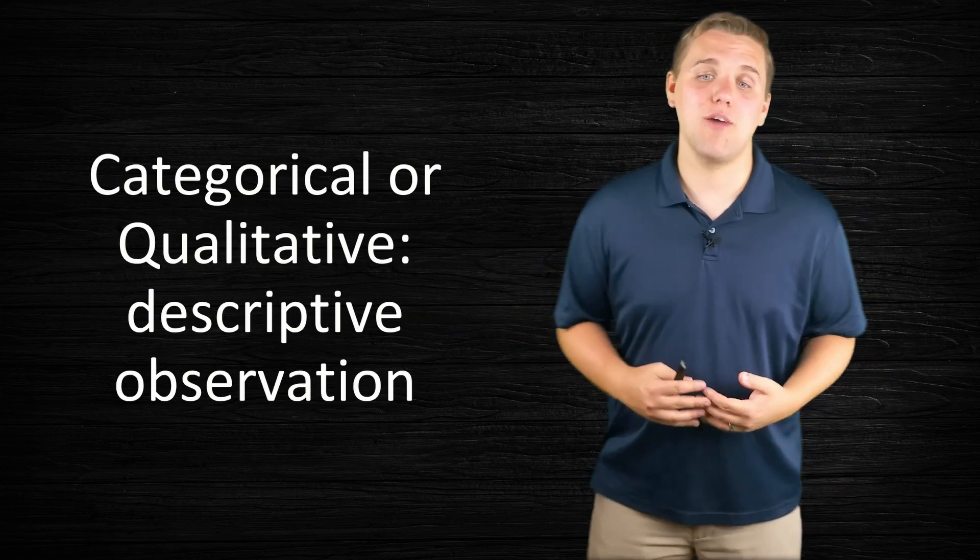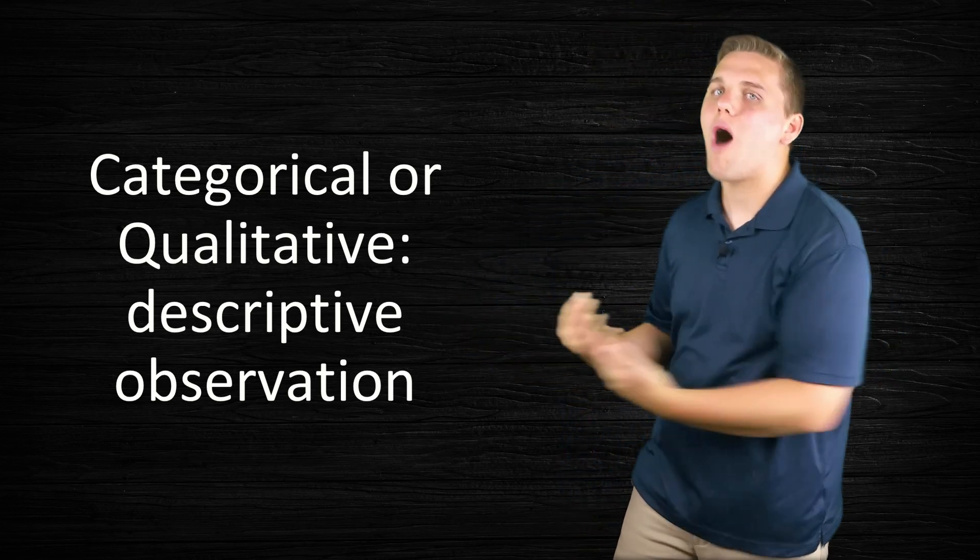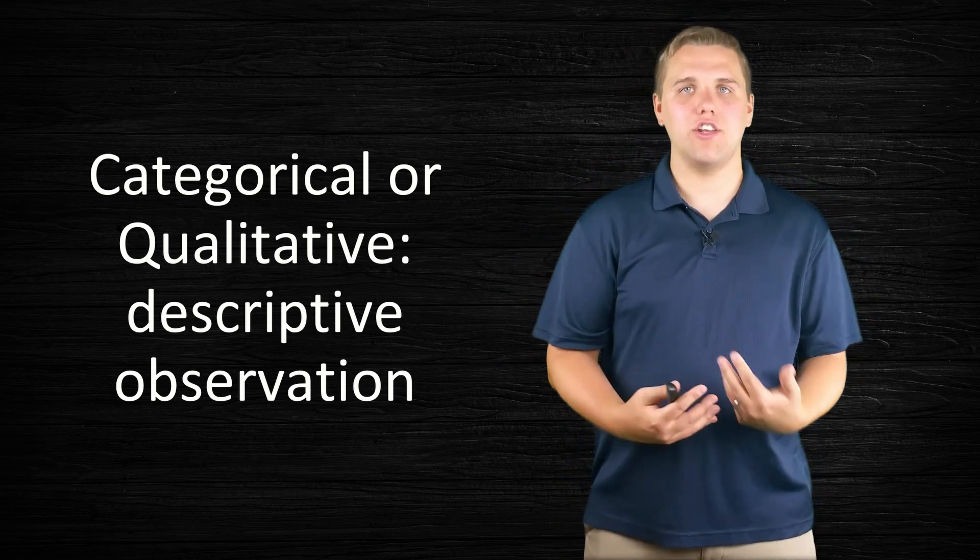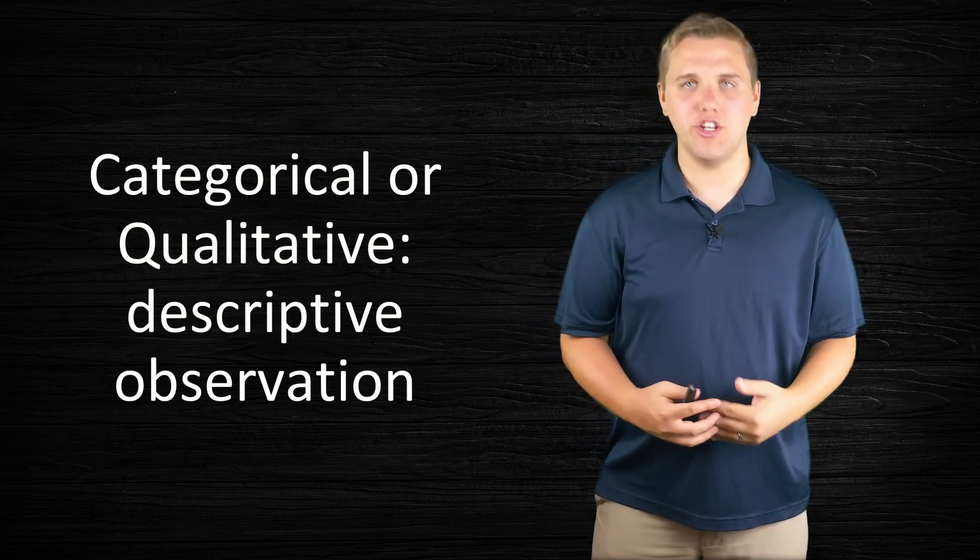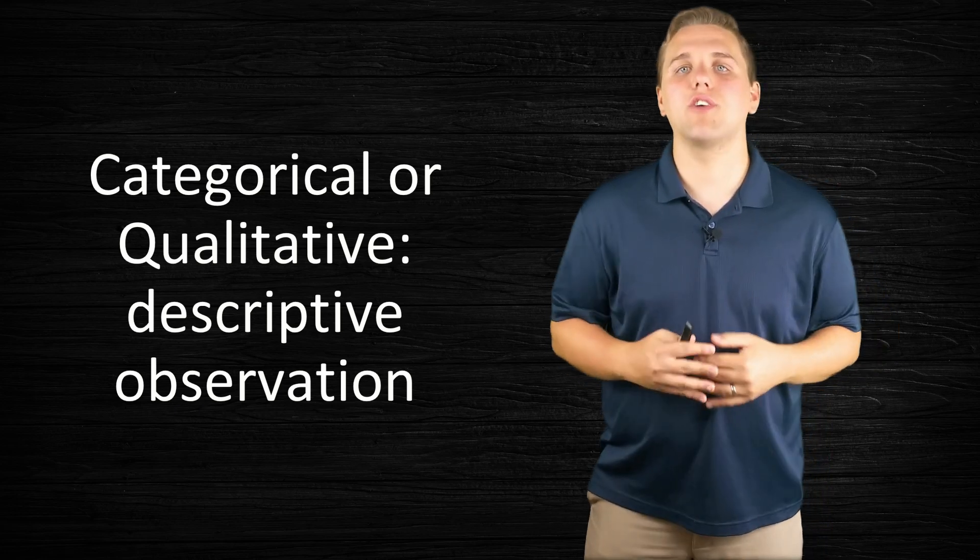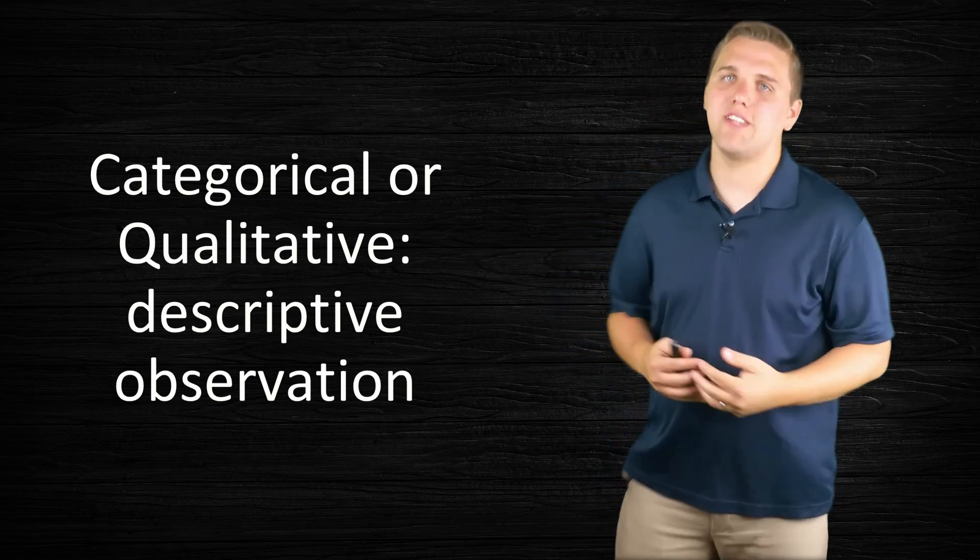The second type of variable is categorical variables, or qualitative variables. These variables are more descriptive in nature—they're descriptive observations. For example, gender: male and female, those are examples of qualitative variables.